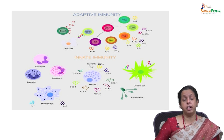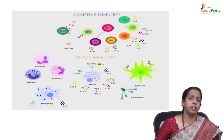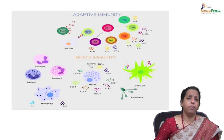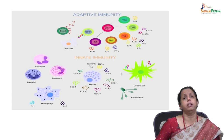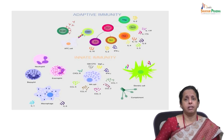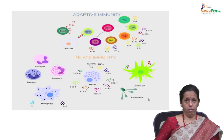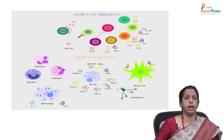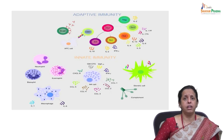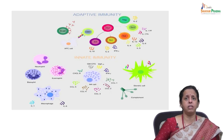Crucial cells in innate immunity include dendritic cells and complement pathways. Activated natural killer cells produce a number of cytokines such as IFN-gamma and TNF-alpha, recollecting the basics of cancer biology.